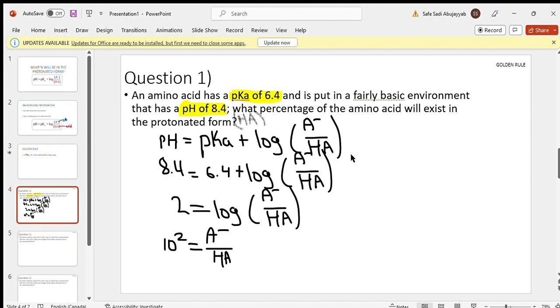Now 10 to the power of 2 equals 100. So 100 equals A minus over HA. Remember, what are we looking for? We're looking for HA, so we have to isolate that. We have all our numbers now.